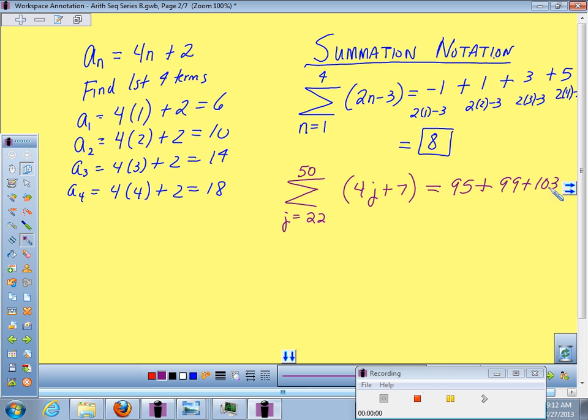What's it going up by? It's going up by 4. Why? What about this formula tells you it's going up by 4? Look at this one up here we already did. The 2N minus 3, what was it going up by every time? 2. What number was in front of the variable? 2.